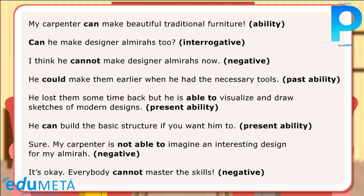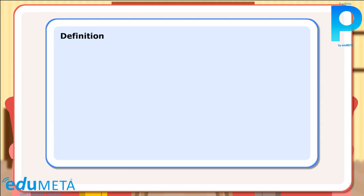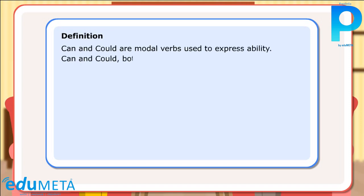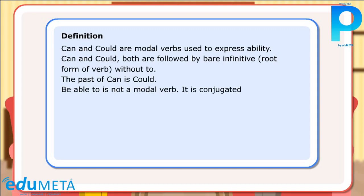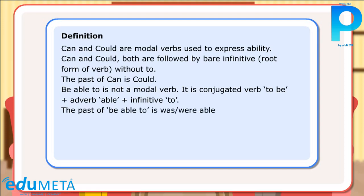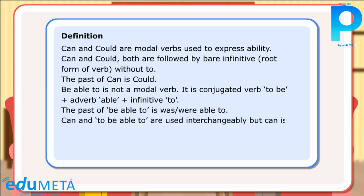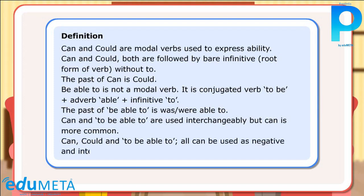Definition: Can and could are modal verbs used to express ability. Can and could are both followed by bare infinitive — root form of verb — without 'to'. The past of can is could. Be able to is not a modal verb; it is a conjugated verb: to be + able + infinitive (to + verb). The past of be able to is was or were able to. Can and to be able to are used interchangeably, but can is more common. Can, could, and to be able to can all be used in negative and interrogative forms.